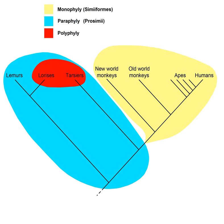According to D.M. Stamos, a satisfactory cladistic definition of a species or genus is impossible because many species, and even genera, may form by budding from an existing species, leaving the parent species paraphyletic, or the species or genera may be the result of hybrid speciation.